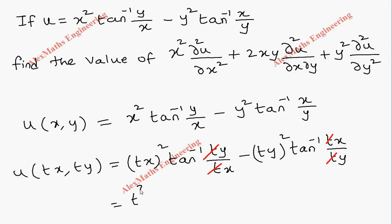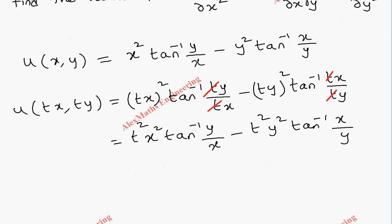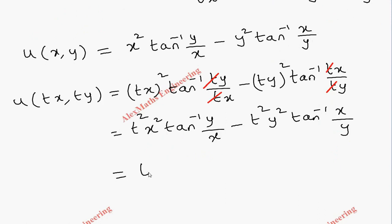It is actually t squared x squared, separating both the terms, then tan inverse y by x. In the same way, this is t squared y squared times tan inverse x by y. Now on the whole, it is possible to take t squared common.